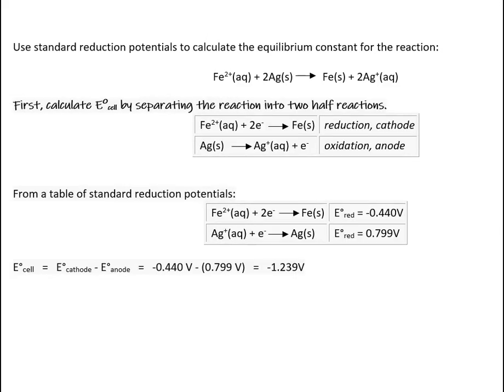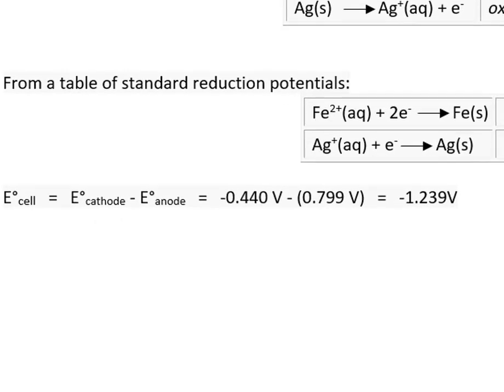Here is another example where we calculate the equilibrium constant for a redox reaction. First, we calculate E°cell under standard conditions and determine it to be negative 1.239 volts. This implies the equilibrium constant is extremely small.